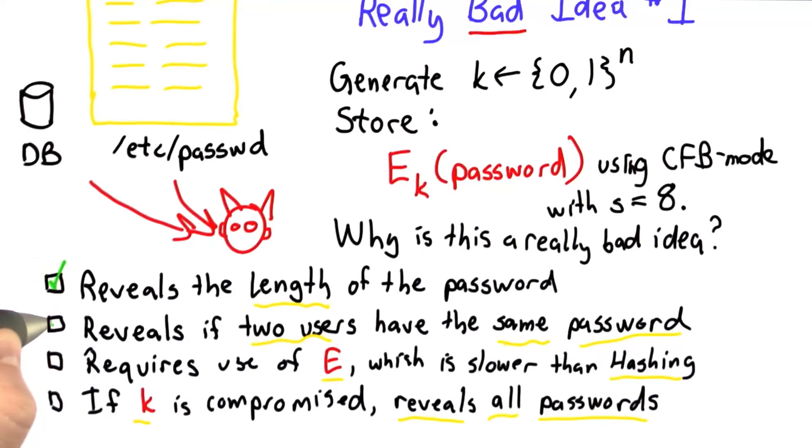The answer is, all except for the third are true. The third is not true because encryption is generally faster than hashing. These three are really big problems with this scheme.